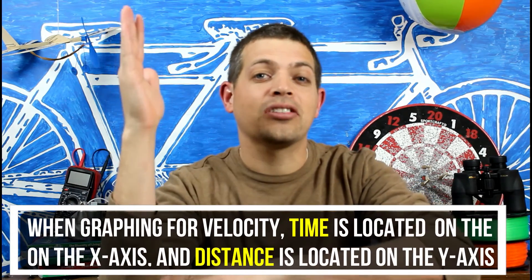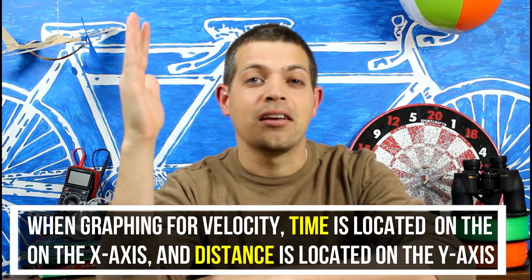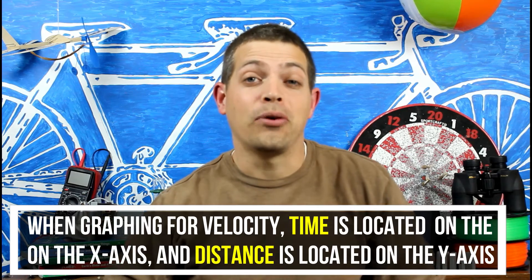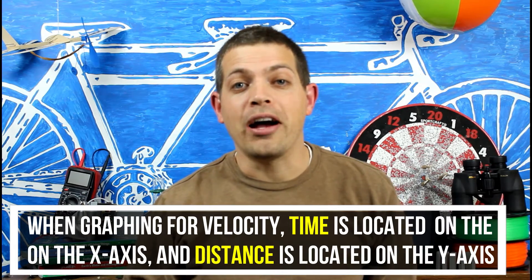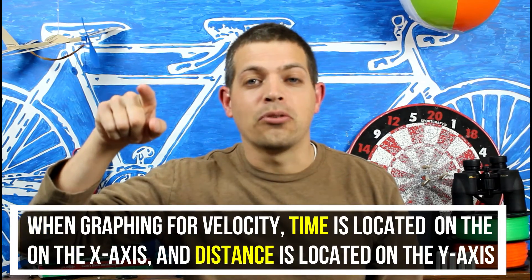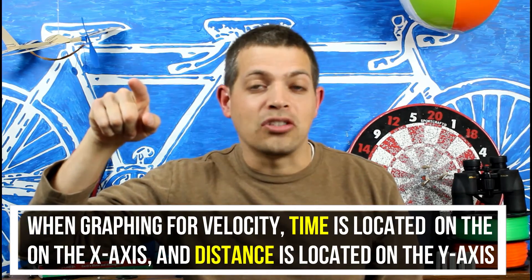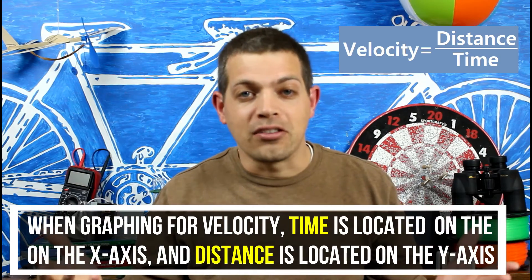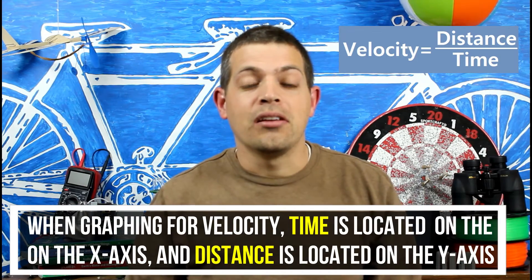And on the y-axis is actually going to be distance. What's really nice about this is if we look at the slope or the rise over run of this graph, when we rise we're looking at the distance. When we actually run, the formula for finding slope is the rise over run, which is distance over time. It's the equation for velocity. Velocity equals distance over time.